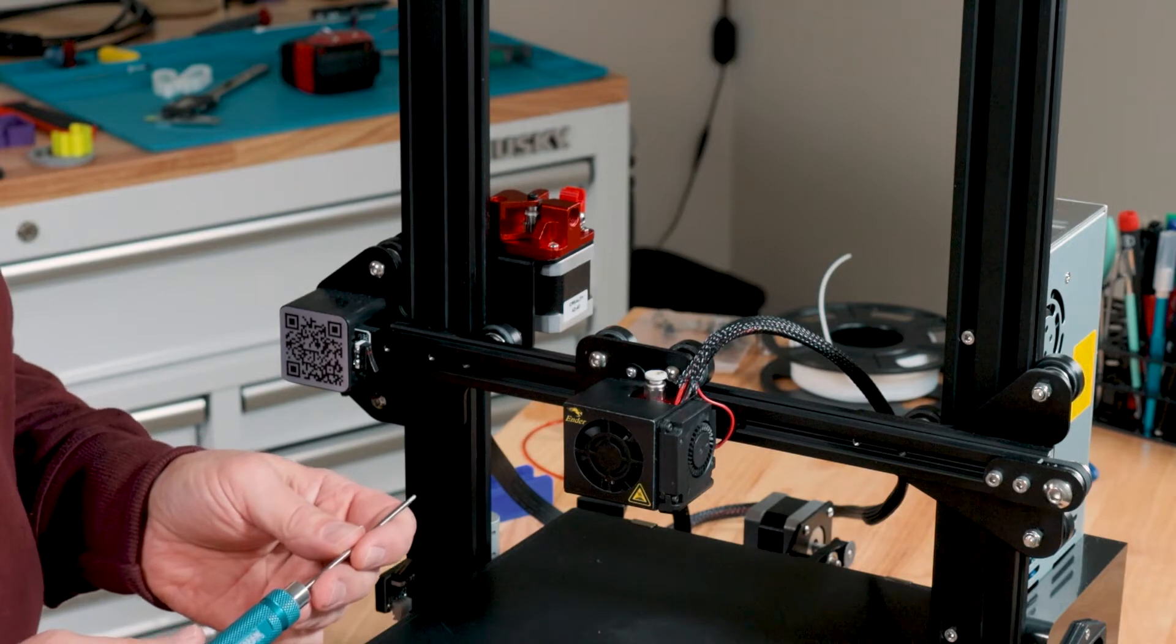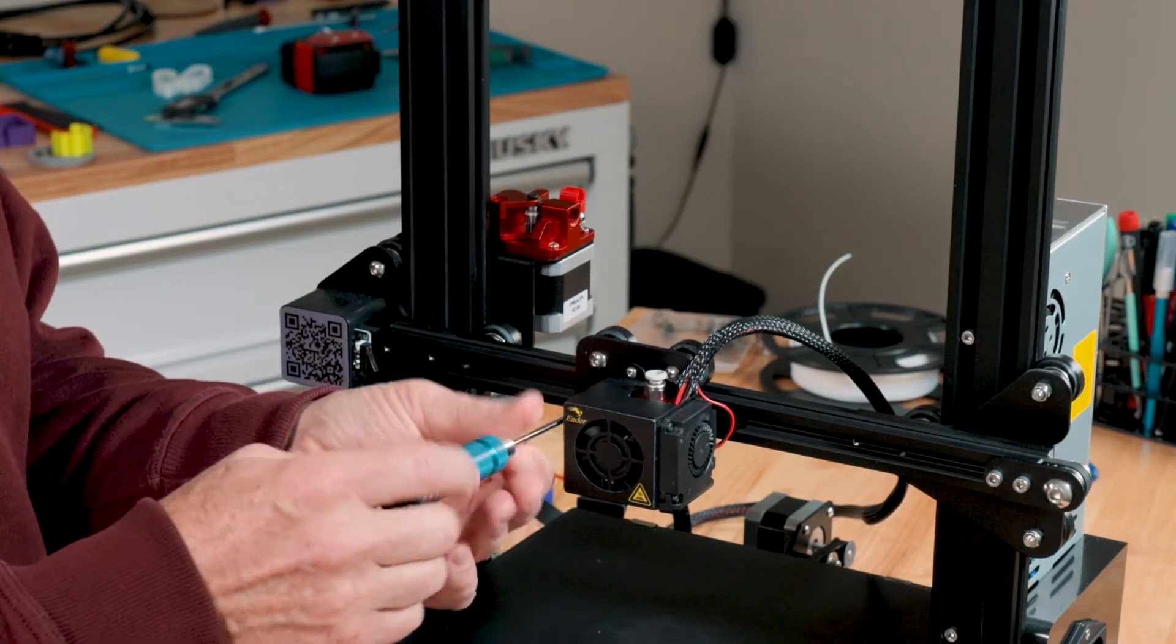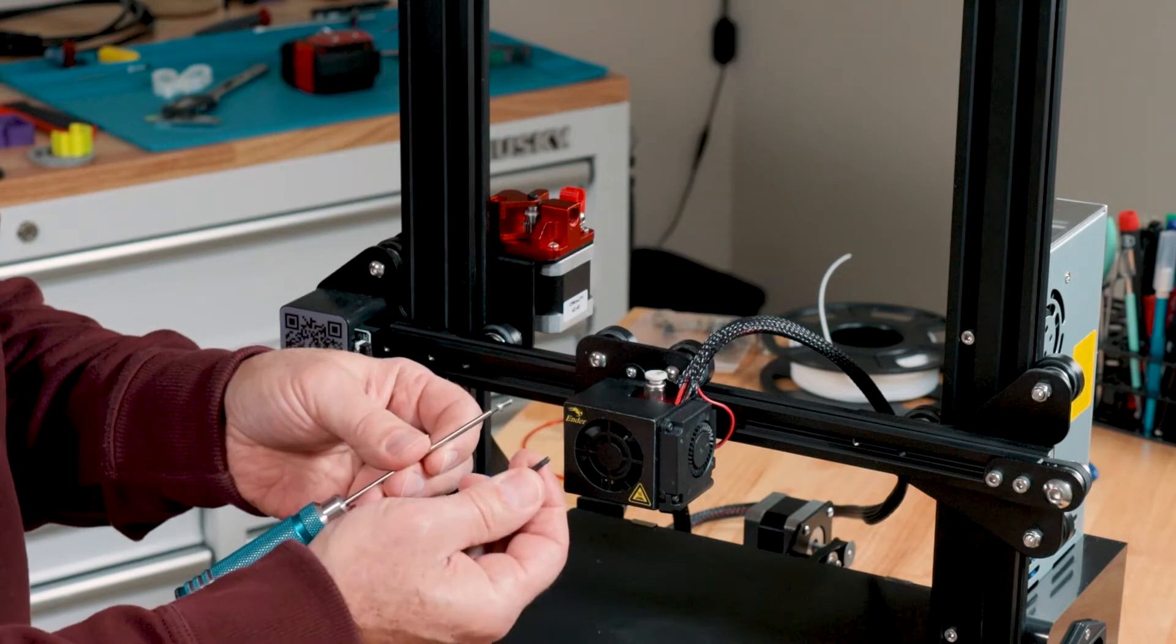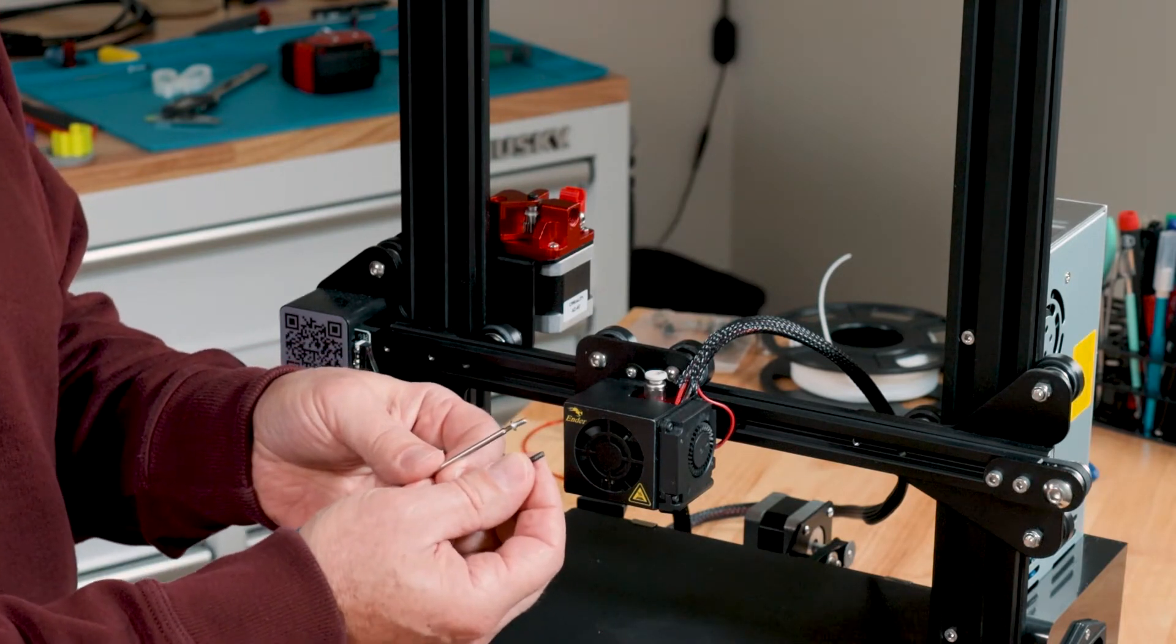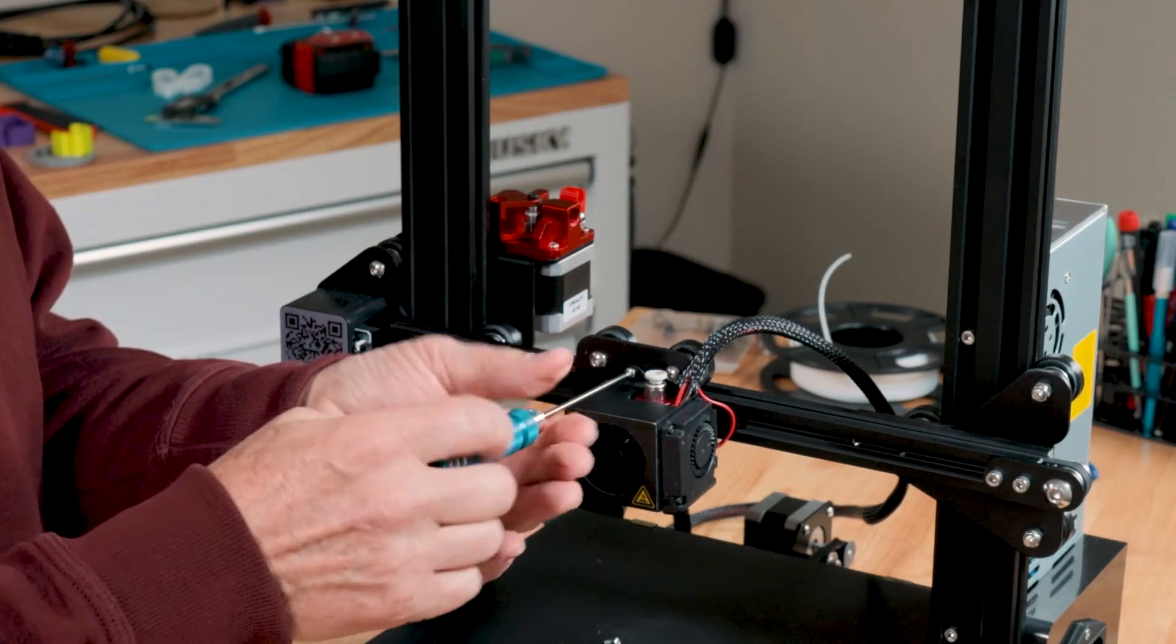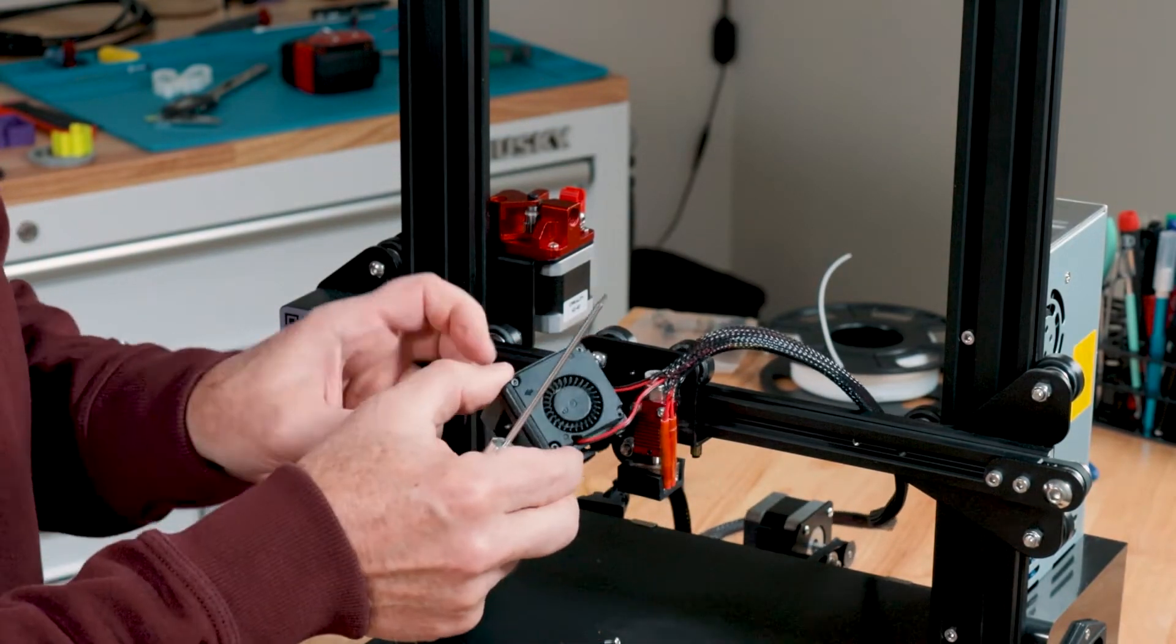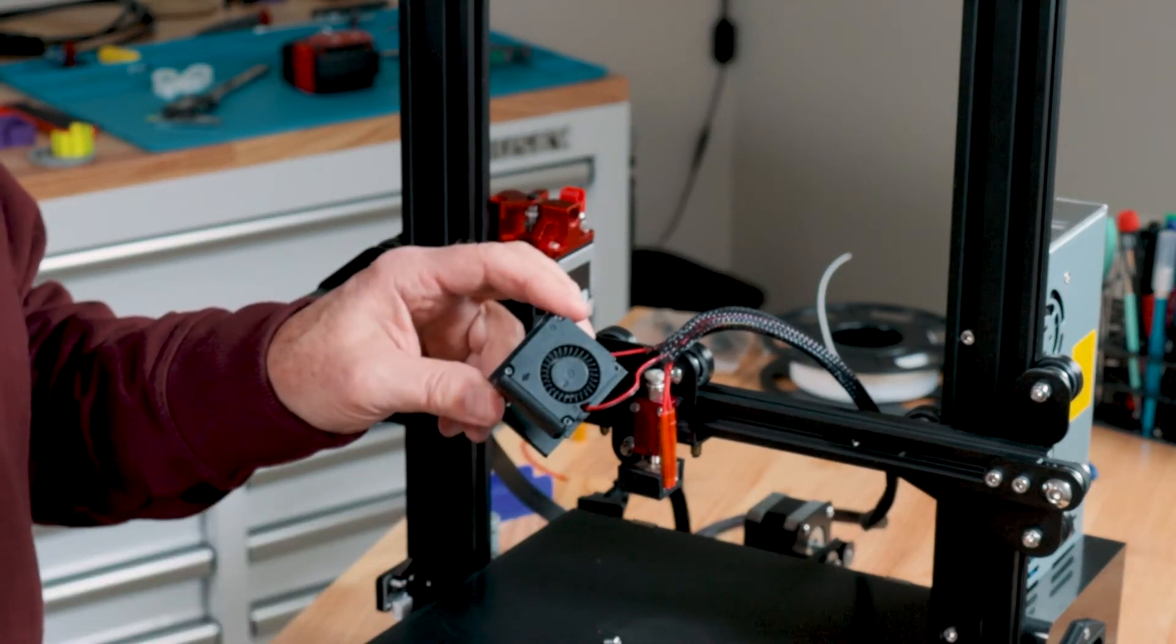So now we need to disassemble the stock fan housing so we can install our new cooling duct as well as our strain relief. These screws here are going to have to be replaced with a longer screw. These are available on Amazon and I'll put a link in the description below. They're just standard M2 metric cap screws. We want to take the four screws out that hold the fan in place.